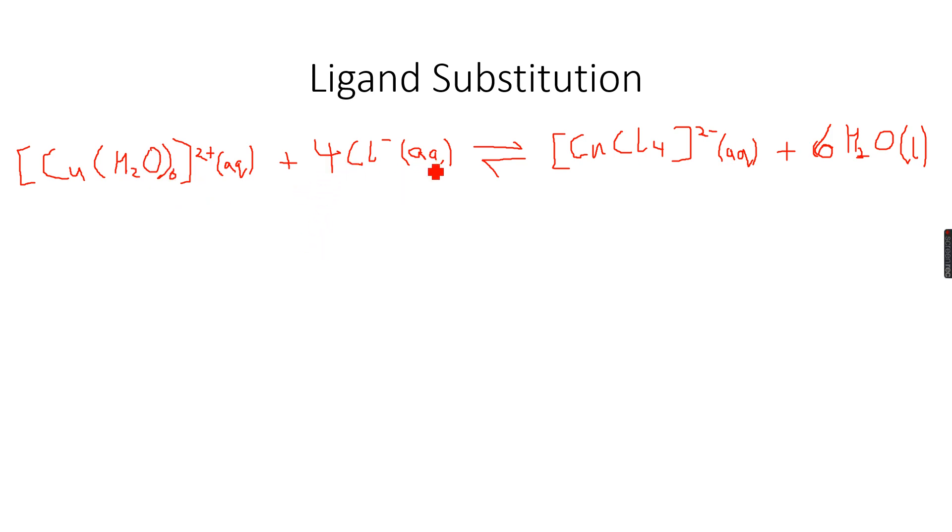Because it's Cu 2+ aqueous plus 4 Cl- in aqueous solution, chloride ions, we get CuCl4 2- in aqueous solution and 6 H2O. This is a yellow solution.